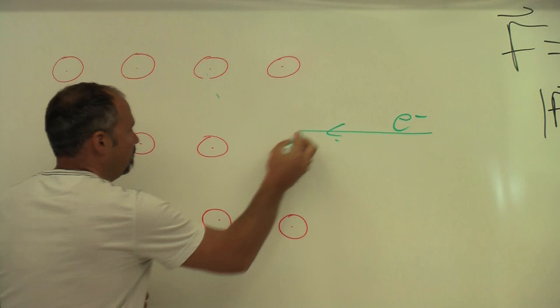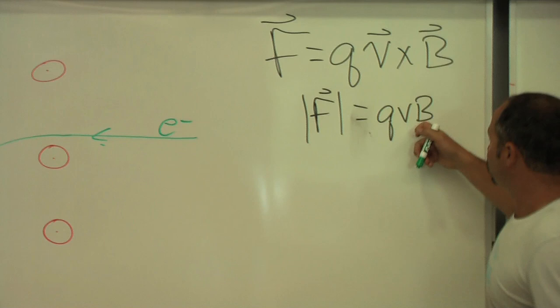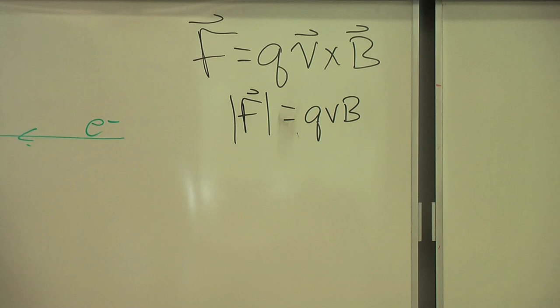Now, if the magnetic field is strong enough, or the charged particle has a large enough charge, or if it's going fast enough, the force is larger, and what you'll see is that it curves into a circle.